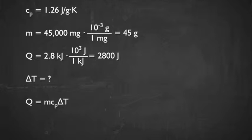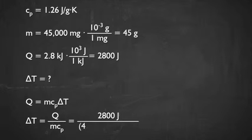Now we can plug this into the equation. First we need to solve for delta T. Delta T is equal to the heat q over the mass times the specific heat. If we plug in the numbers, we have delta T equals 2,800 joules over 45 grams times 1.26 joules per gram kelvin.